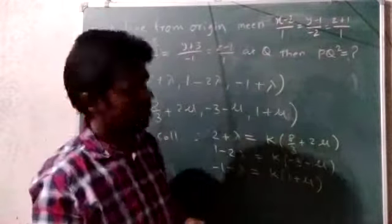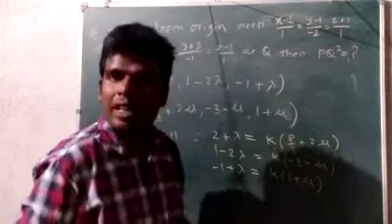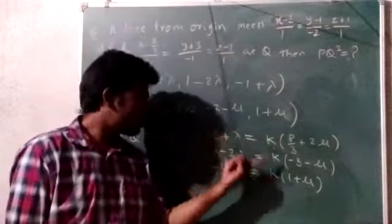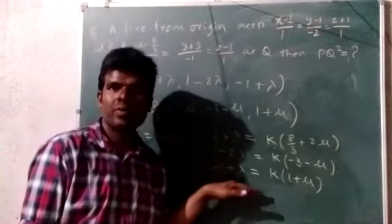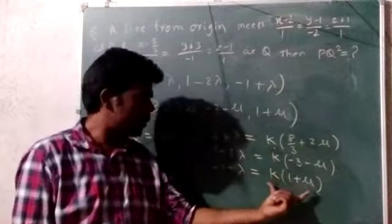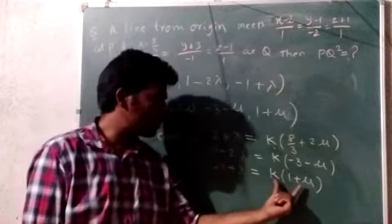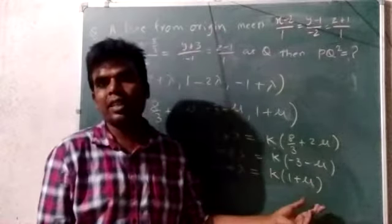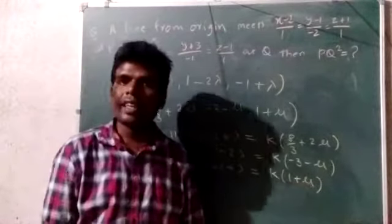Three unknowns, three equations. We have some strategies. If you add these three, then lambda will be removed, leaving k and mu. Then you can use -1 + lambda equals k + k mu. Finally, you'll get lambda and mu.